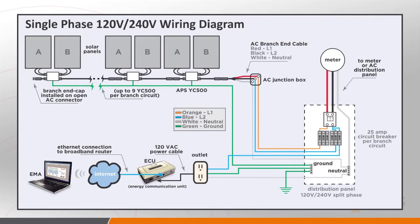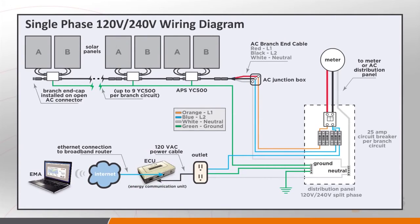This is a simplified typical residential single-phase system diagram. The YC500 is assigned to two PV modules, typically described as side A and side B. When hooking up the AC cabling, there are three conductors: the red L1, the black L2, and then the neutral, which is used in the PLC communication with the ECU. A quick word on ECU placement: the ECU is plugged into a standard 120-volt outlet, and you want to get it installed as close electrically as possible to the array to eliminate as many communication problems as possible.